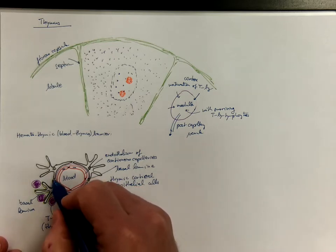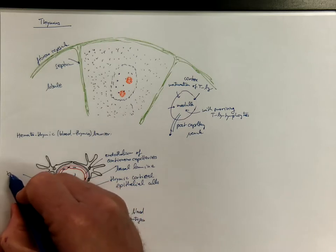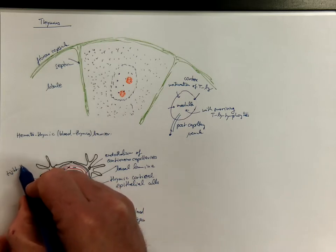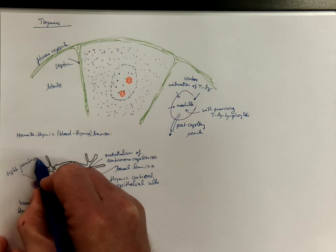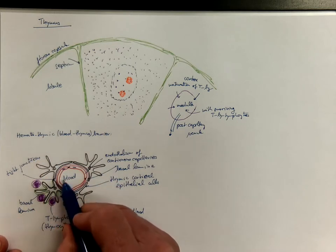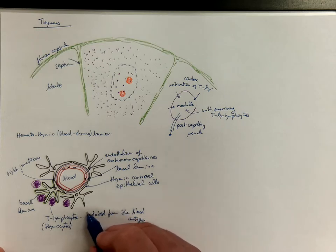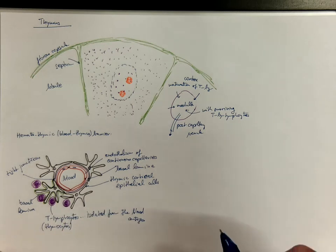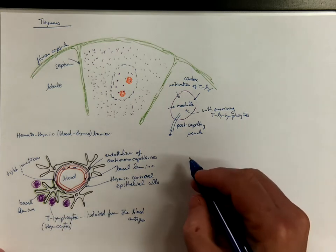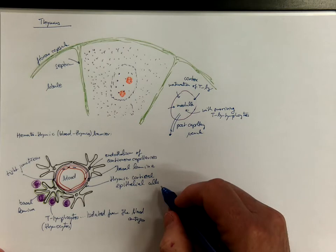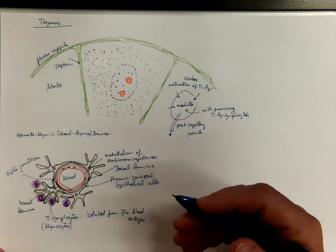Here we got tight junctions that are preventing any molecules to pass through the intracellular space. This selection of which antigens will or will not be offered to the maturing T lymphocytes is essential for the selection of lymphocytes and for their training.